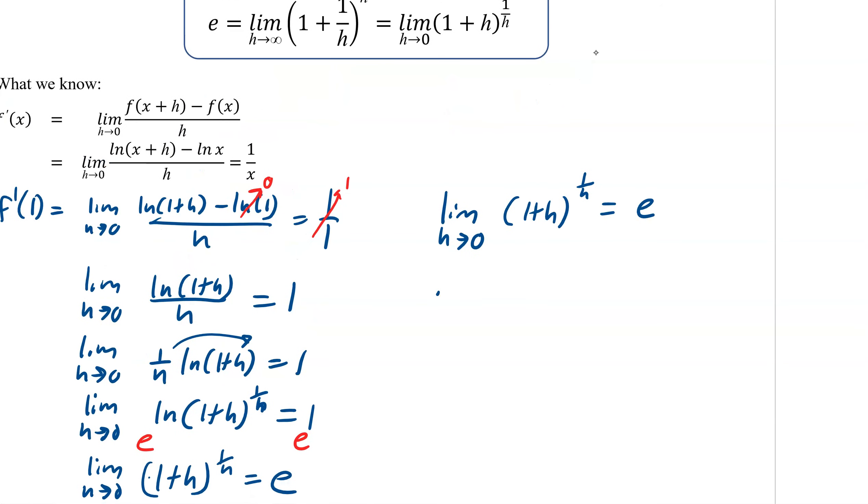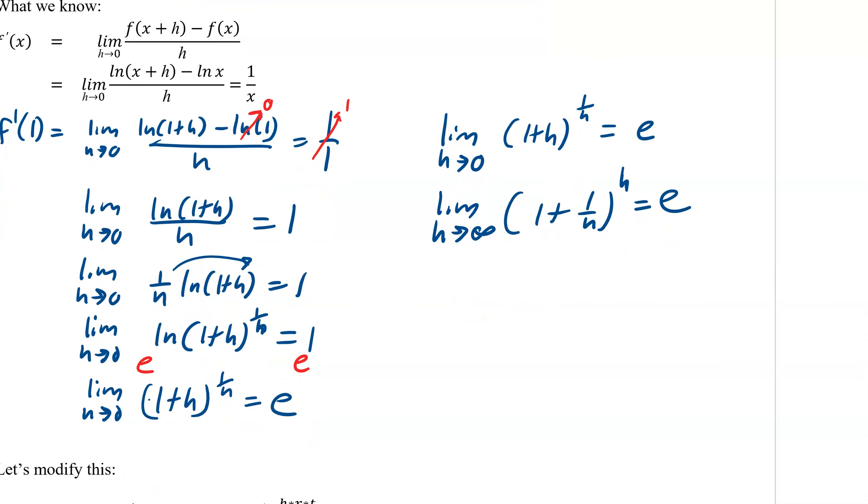So the limit as h approaches zero of 1 plus h to the power of 1 over h is e. And then we already know that that is the limit as h approaches infinity of 1 plus 1 over h to the h. So you're really just switching all the fractions into whole numbers. You're flipping them, flipping everything, flipping everything with an h in it.